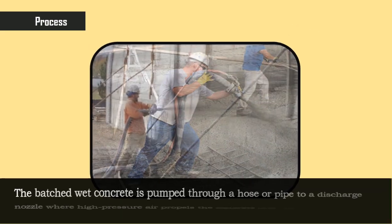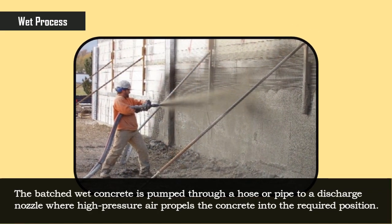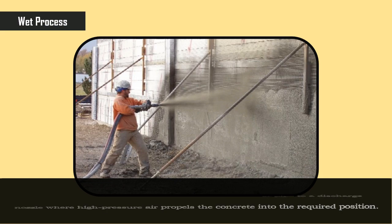In the wet process, the batched wet concrete is pumped through a hose or pipe to a discharge nozzle, where high pressure air propels the concrete into the required position.